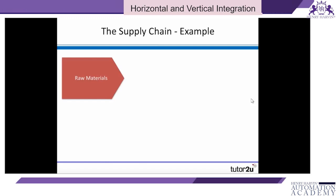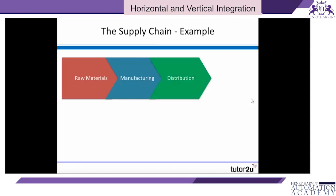A simple supply chain involves businesses supplying raw materials, which are then put into a manufacturing process. The output from manufacturing goes to distributors, who in turn pass the finished goods on to retailers, and finally on to consumers. That is the supply chain working from raw materials to manufacturing, on to distributors, and finally to retailers.